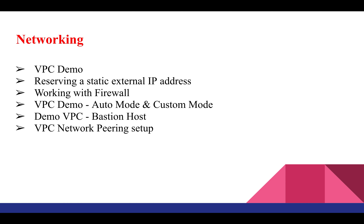Under Networking, first we are going to see the Virtual Private Cloud demo — what is a VPC. Second, reserving a static external IP address, which is equivalent to Elastic IP in Amazon Web Services. Third, working with firewall rules demo. Fourth, VPC demo — auto mode and custom mode. Fifth, VPC bastion host — creating a simple web server and testing connectivity. Finally, setting up VPC network peering — concepts and configuration.